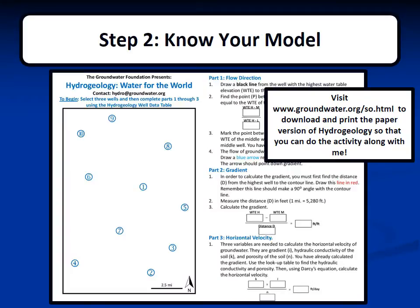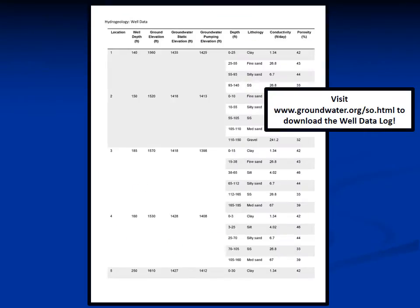Now that you know the basics, you are ready to move on to Step 2: know your model. To learn about the hydrogeology groundwater model, we are going to do an activity using the paper version of the hydro model, which you can download at the Groundwater Foundation's website. You will also need colored pencils, a ruler, and if you like, a calculator. You will also need to download the hydrogeology well data log, which lists the well depth, ground elevation, groundwater static elevation, groundwater pumping elevation, and lithology information for all ten wells. All elevations are given in units of feet.